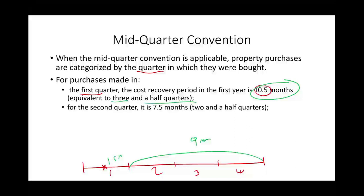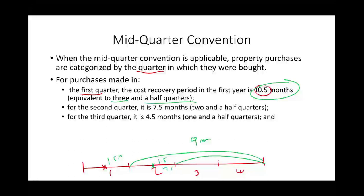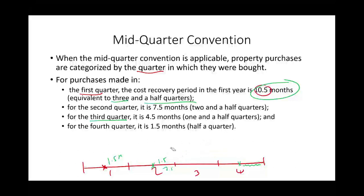If assets are placed in the second quarter, the depreciation period is 6 months plus 1.5 months, equaling 7.5 months. If placed in the third quarter, it's 4.5 months — one full quarter plus 1.5 months from that quarter. If placed in the fourth quarter, you only depreciate the asset for 1.5 months, which is half of a quarter. You can also express these periods as percentages.